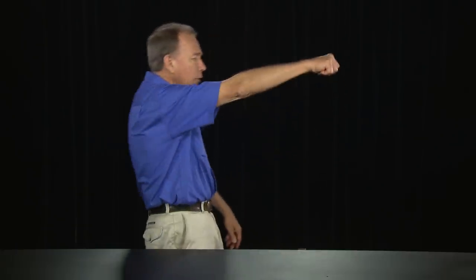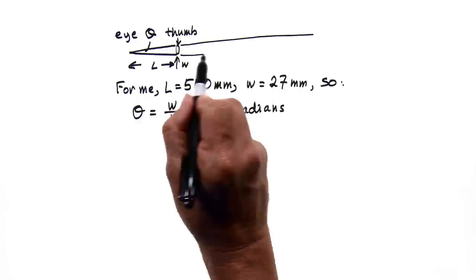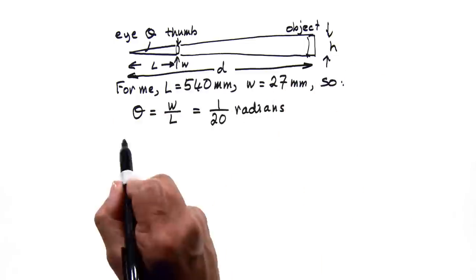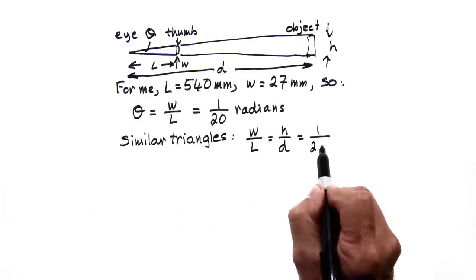Now suppose that I look at an object that subtends that same angle. From similar triangles, H over D is also 1 over 20.